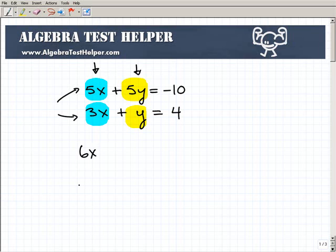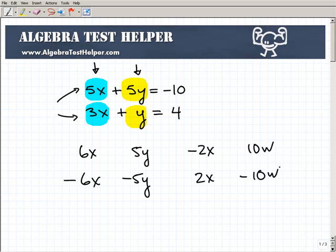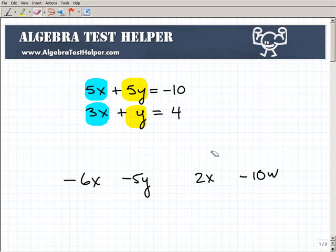Let me just give you some examples. So let's say I had 6x in my first equation and negative 6x. Well, that's the opposite. That's what I'm looking for, two opposite pairs. Or let's say here I have 5y in my first one, but here I have y. So that's not an opposite. But if I had a negative 5y, that would be an opposite. Negative 2x, what would be the opposite of that? 2x. 10w, the opposite of that would be negative 10w.